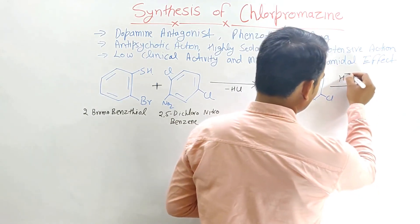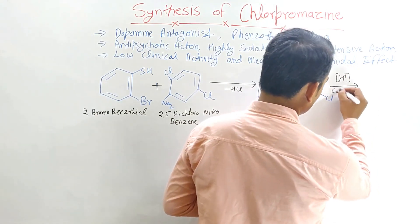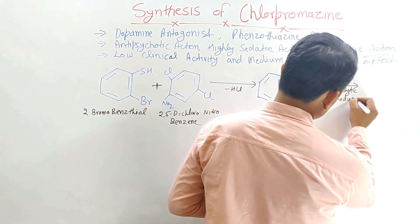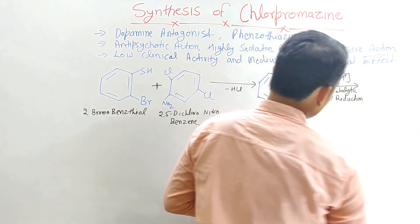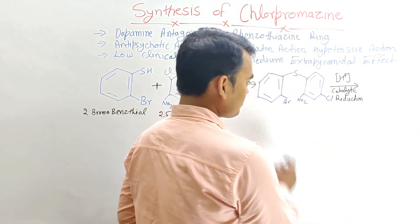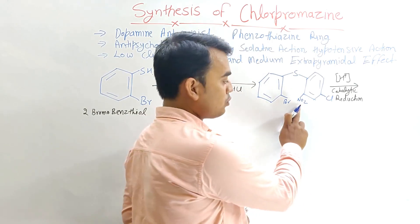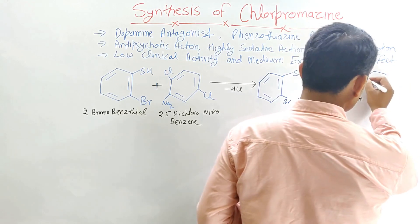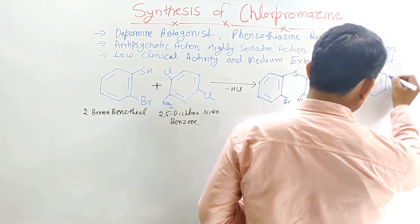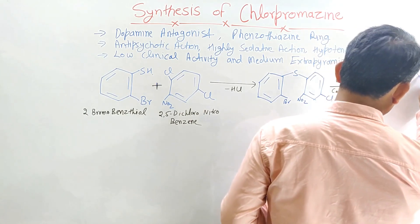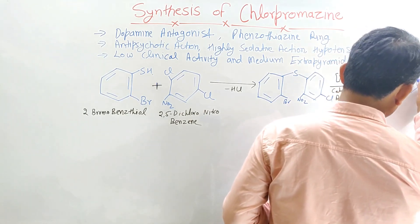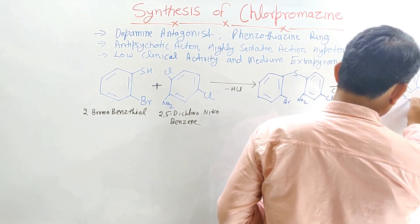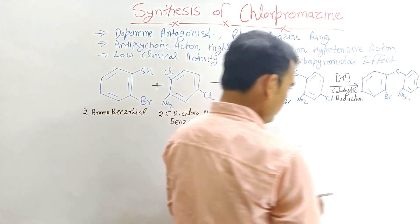This intermediate compound then undergoes catalytic reduction with hydrogen. By this catalytic reduction, the nitro group (NO₂) is converted into an amino group (NH₂). The compound now has: a chlorine, a bromine, and an NH₂ amino group.